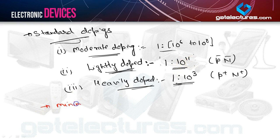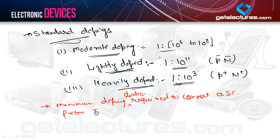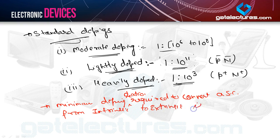The minimum doping ratio required to convert a semiconductor from intrinsic to extrinsic is 1:10^8.